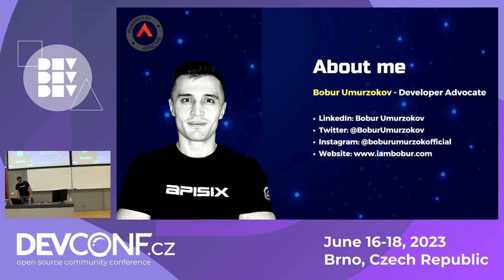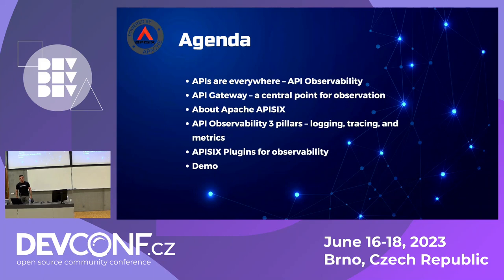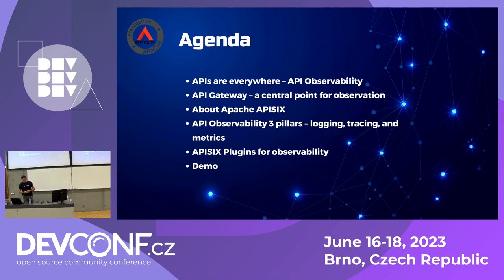Today I have quite an interesting topic to bring. We're going to start by talking about what API observability is, then explain how you can use an API Gateway as a central observation point for your APIs. I'll briefly introduce the open source project APISIX, then dive into the three pillars of observability — logging, metrics, and traces — and show you a demo of how to use these plugins.